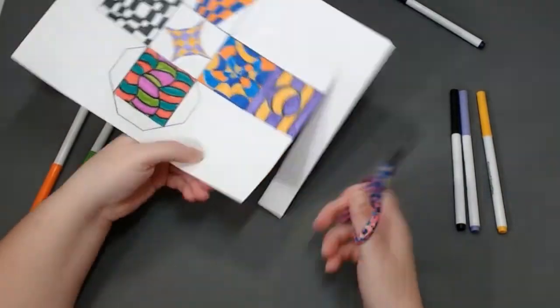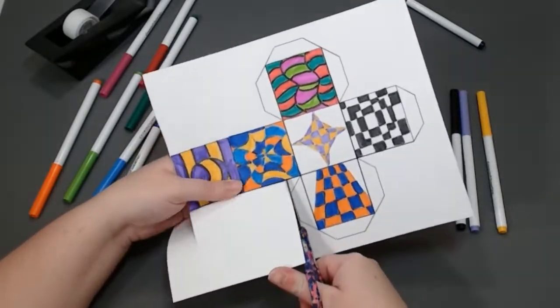When you have finished your cube, you are going to cut it along the outside line. Be careful not to cut off the tabs.